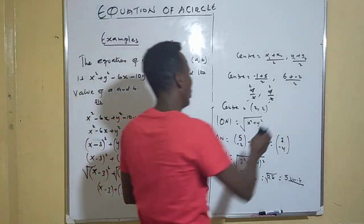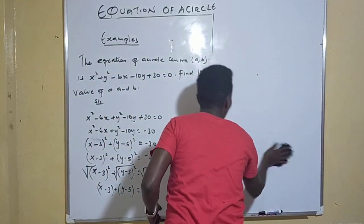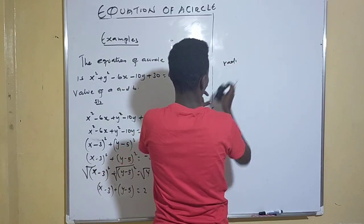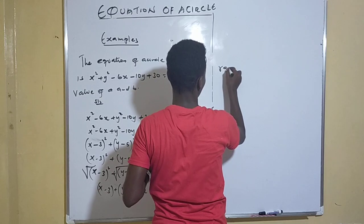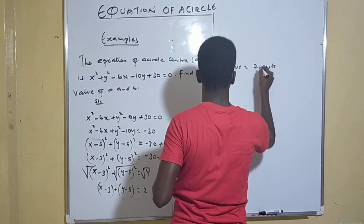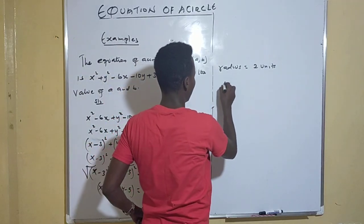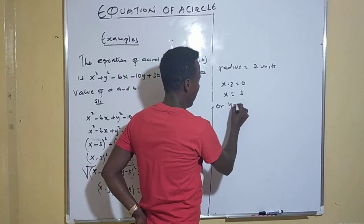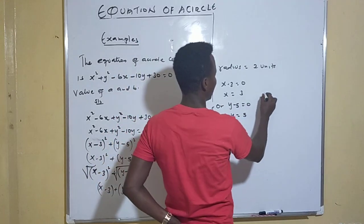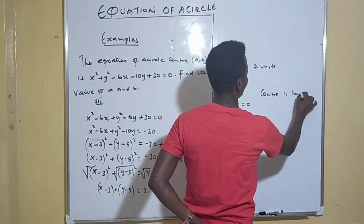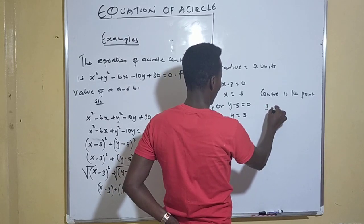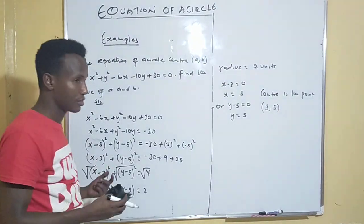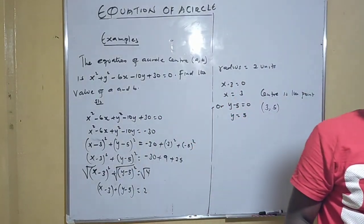From (x-3)² + (y-5)² = 4: x - 3 = 0 gives x = 3, and y - 5 = 0 gives y = 5. So the center is (3, 5), meaning a = 3 and b = 5. That is how you solve this during the national exam. Please subscribe to our YouTube channel and share with your friends and family.